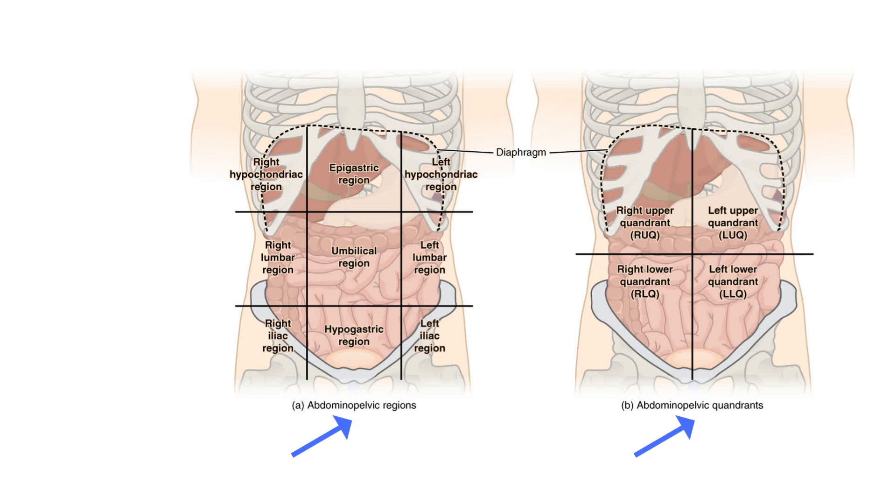The superior transverse plane is called the transpyloric plane and the inferior plane is called the transtubercular plane. The center of the nine regions is the umbilicus.